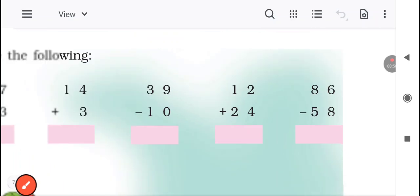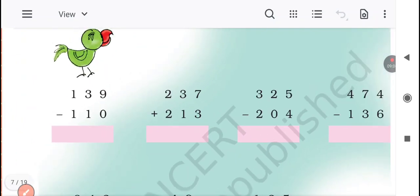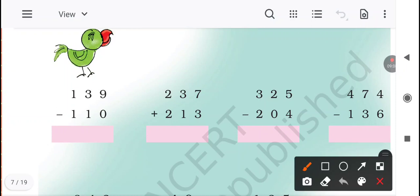Now let's move further. 139 minus 110 is equal to - 9 minus 0 is equal to 9, 3 minus 1 is equal to 2, 1 minus 1 is equal to 0. So 237 plus 213. Yaha pe aapko dhyan rakhna hai, see, plus sign is there. 7 plus 3 is equal to 10. 0 we will write here and 1 will be carried forward. 1 plus 3 is equal to 4, 4 plus 1 is equal to 5. 2 plus 2 is equal to 4.